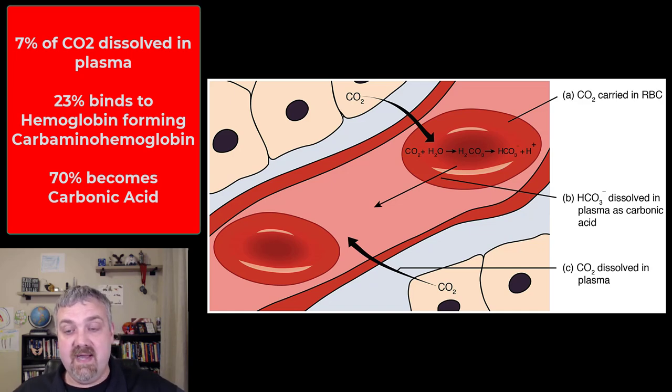If you see an acid base disturbance in the body, the first place you would look is the respiratory system because if you have too much carbon dioxide, that means there's going to be too much acid in your blood and your pH would drop, potentially dangerously low. If you have too little carbon dioxide, like if you're hyperventilating, then you would have too little acid in your blood and your pH would climb. So hopefully you can see why it's very important.